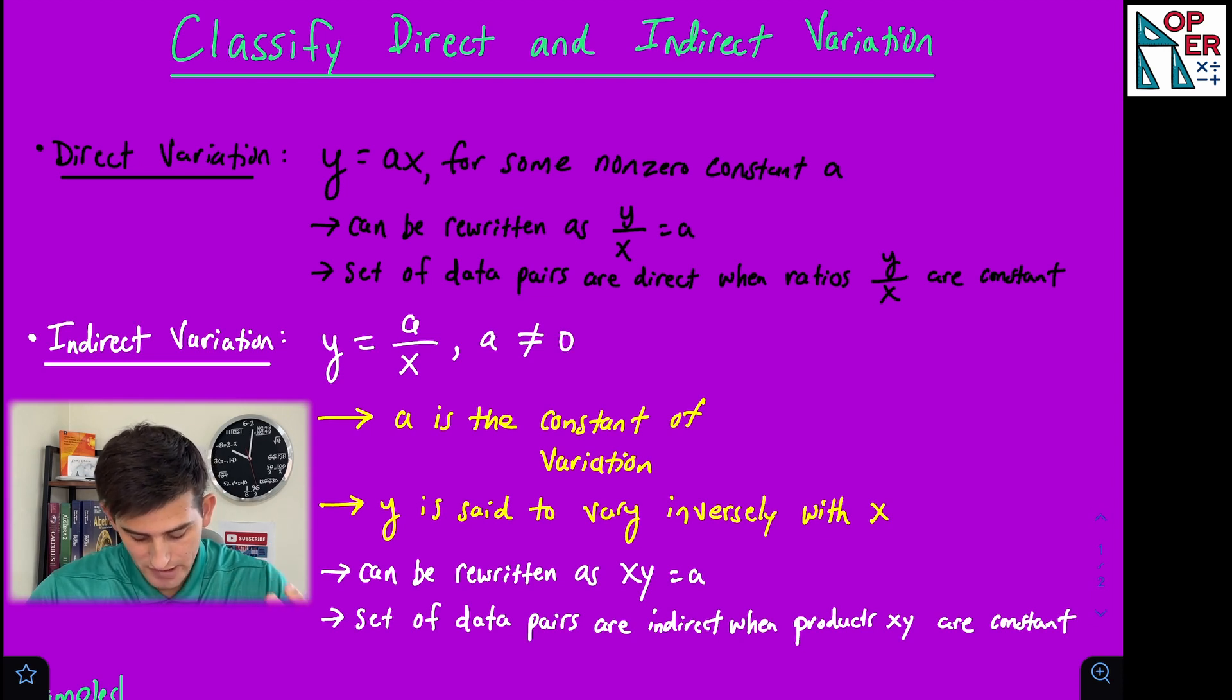For a table of values, this equation could be rewritten as x times y equals a. So now with our table of values, if our data pairs have products x times y, if those are constant, then we would say it is indirect variation.